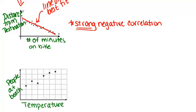So we don't have any numbers here but I can see as my temperature is increasing, the number of people at the beach is slightly increasing as well. So if I were to try to draw in a line of best fit for this one, it might look something like that.